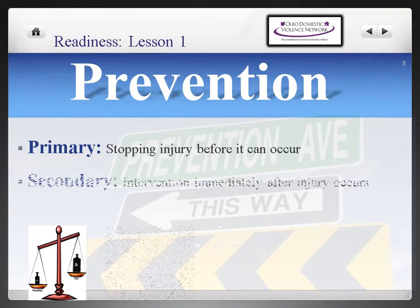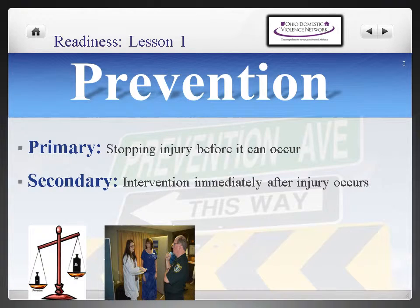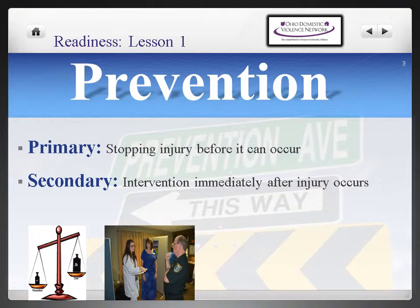Secondary prevention is best defined as intervening immediately after the injury or violence has occurred. In the case of relationship and sexual violence, when someone has been victimized, getting appropriate services is paramount and can include getting to a hospital for evidence collection, to a crisis helpline for support, or to a safe house for shelter. For perpetrators, secondary prevention looks like arrest, being served a protection order, or other accountability measures.